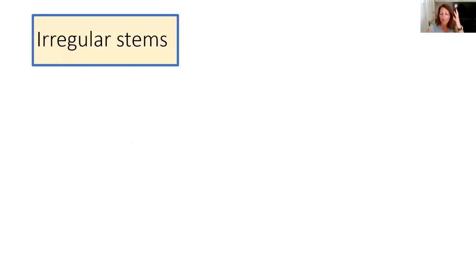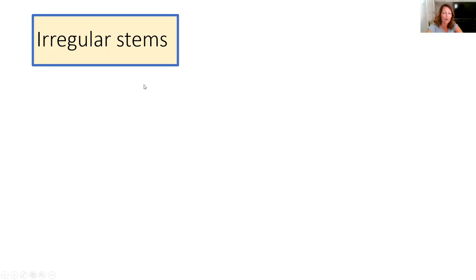That would all be great if all verbs were regular. However, French wouldn't be as fun if there weren't lots of irregular verbs. The problem is that the more you use certain verbs, the more they get corrupted and changed over time — that's what happens with irregulars. We've got them in English too, we just don't notice because we've grown up speaking it. But in French we have to learn them.